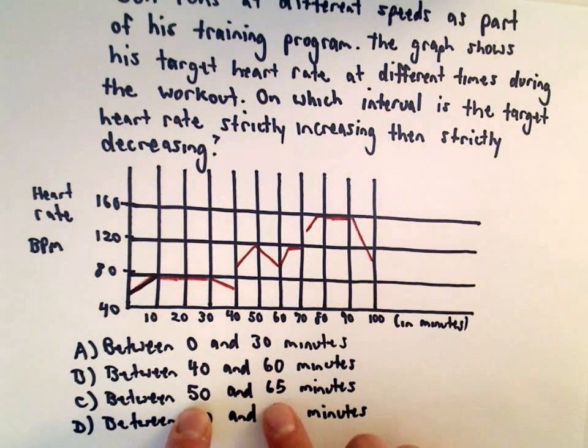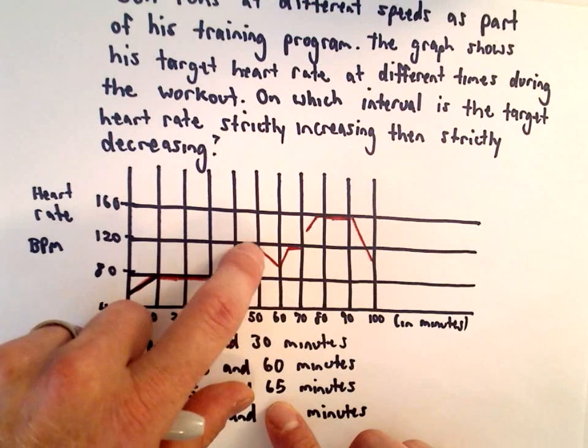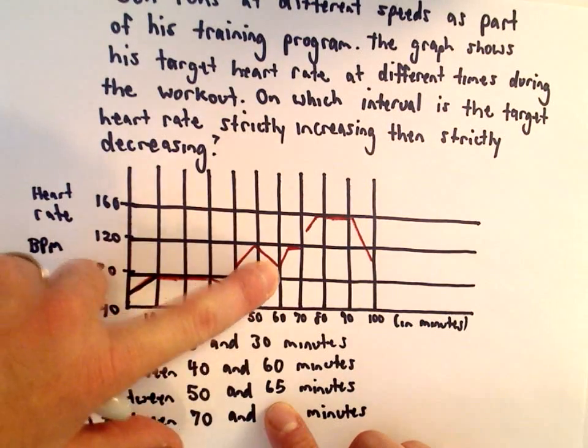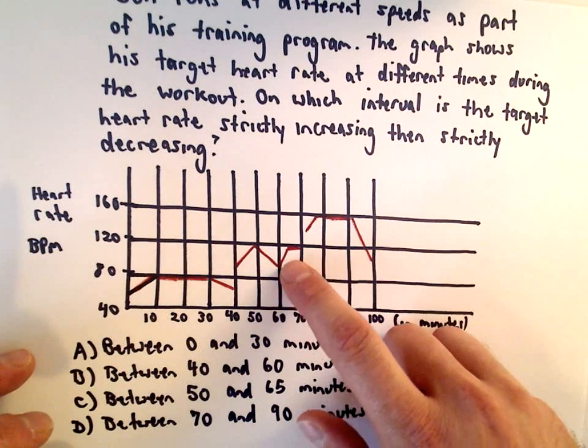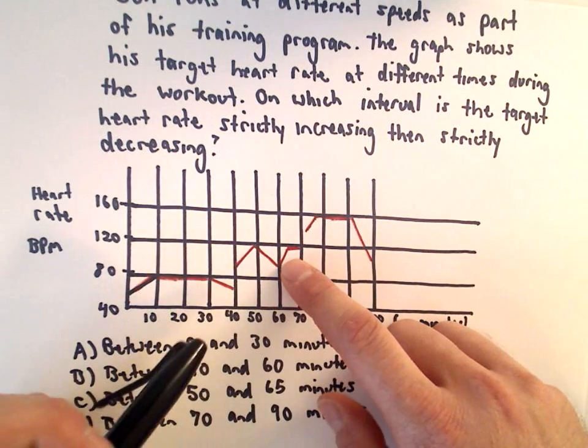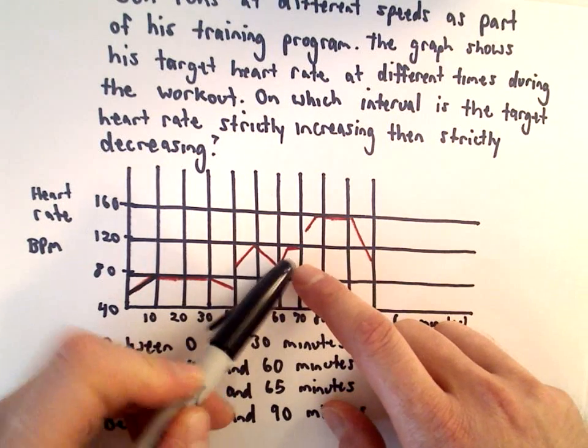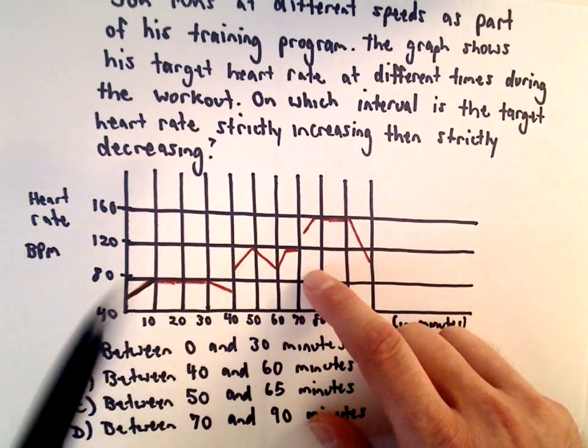Answer choice C says between 50 and 65 minutes. Well, at 50 minutes it starts decreasing up to the 60-minute mark, and then past that, it starts increasing. So over that interval, it's strictly decreasing and then increasing, but we want the opposite of that. We want it to be increasing and then decreasing, so answer choice C is not correct.